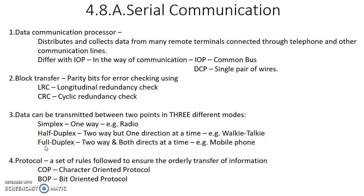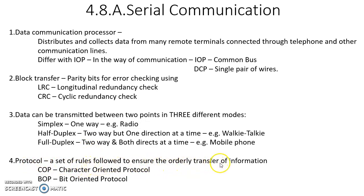The third type of data transmission method is full-duplex, where two-way communication occurs and both can speak at a time, like mobile communication. When two entities are communicating, they set a set of rules and follow those rules so that they can communicate efficiently. This is called a protocol — a set of rules followed by both entities for the orderly transfer of information.